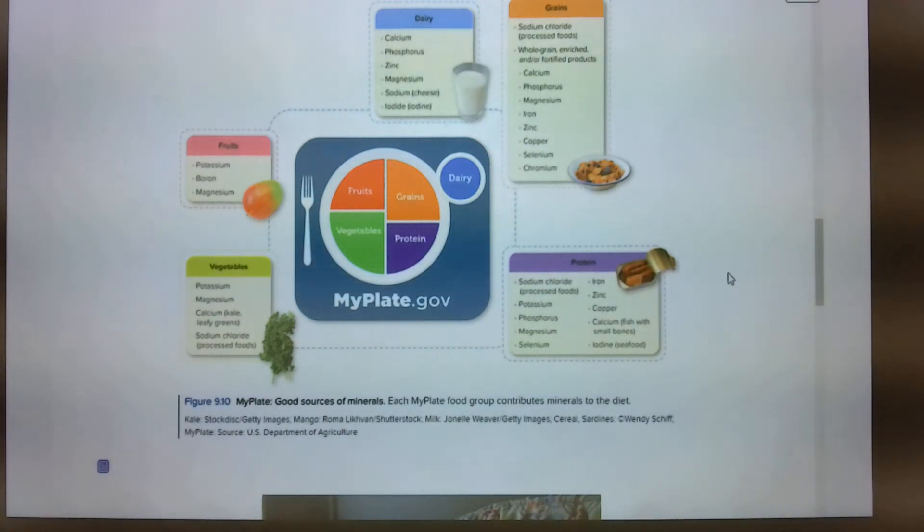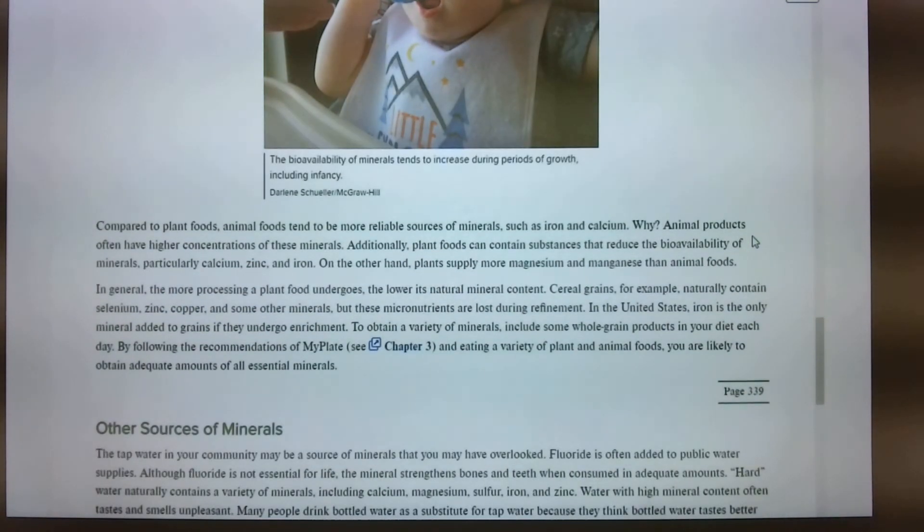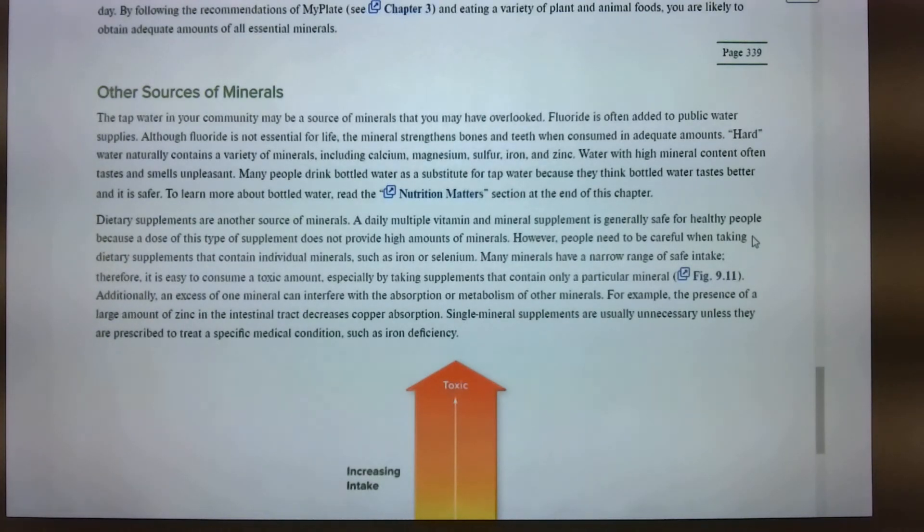Sources of minerals. Milk does a good job. Does a pretty good job. Grains. A lot of these are fortified or enriched. Vegetables. Proteins. The body's ability to absorb and use minerals, bioavailability, depends on many factors. A major factor is the body's need for the mineral. In general, the requirements increase during periods of growth, such as infancy, puberty, pregnancy, and breastfeeding. Compared to plant foods, animal foods tend to be more reliable sources of minerals, such as iron and calcium. Other sources of minerals, tap water in your community. Here in Arkansas, how many of you know the water is fluorinated? Most of them in Arkansas that I'm familiar with. Missouri, the town that I came from, did not. Several communities in the area did not fluoridate the water. It is a good way to add, it is good for tooth health, okay, but there is a toxic level, which is why they put it.